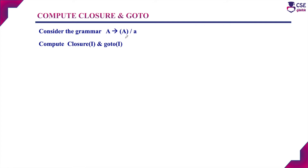Consider the grammar: A derives open bracket A closed bracket, or A. For this grammar we need to compute closure of I and goto of I.